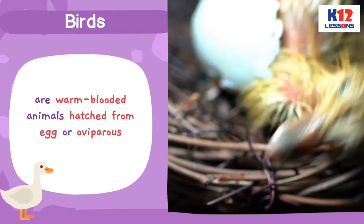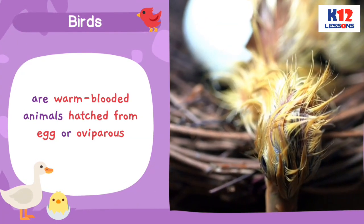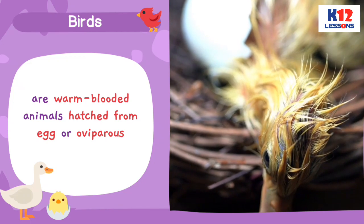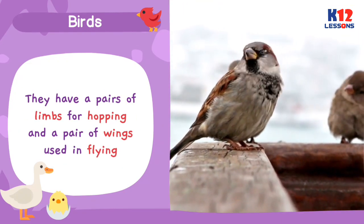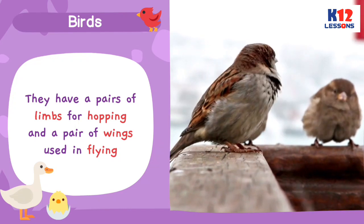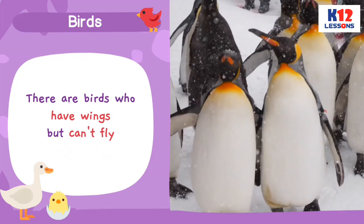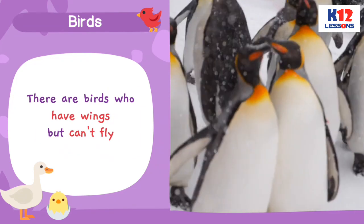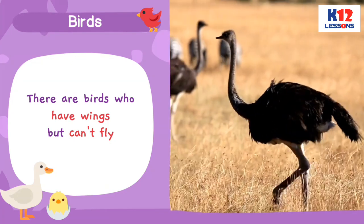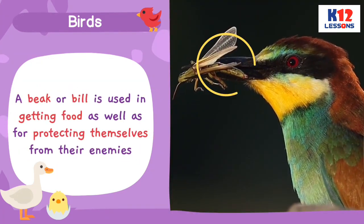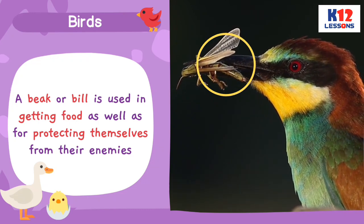Birds are warm-blooded animals hatched from egg, or oviparous. They have a pair of limbs for hopping and a pair of wings used in flying. There are birds who have wings but can't fly. A beak or bill is used in getting food as well as for protecting themselves from their enemies.